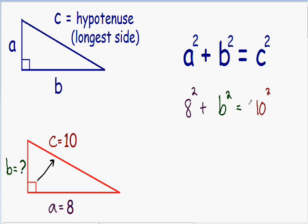Now if we simplify this a little further on the left, we have 8², which is just 8 times 8, which is 64, plus b², which we don't know yet. This is all equal to 10², which is just 10 times 10, which is 100.